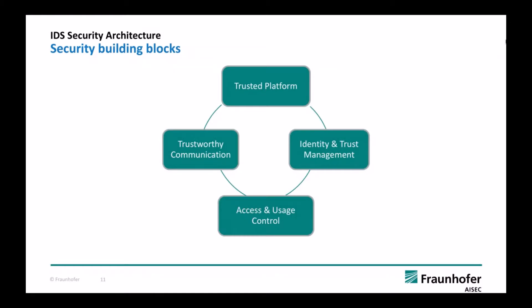The basic building blocks of our security architecture are: a trusted platform — in our world, the connector — which must be trusted and trustworthy, with a certification scheme and service isolation. We need trustworthy communication, where I must know who I'm talking to and that data is confidential when transmitted and cannot be altered. We need robust identity and trust management, and access and usage control to manage who can access data and potentially control data even after it leaves our connector.